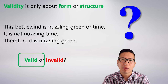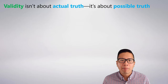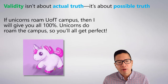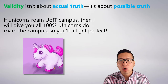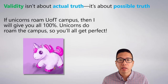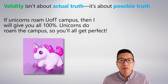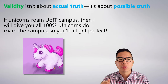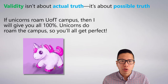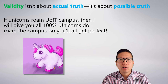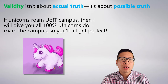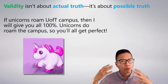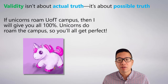Not only is validity only about form or structure, that means it's not about actual truth — it's about possible truth. Take a look at this argument: 'If unicorns roam U of T campus, then I will give you all 100%. Unicorns do roam the campus, so you all get perfect.' Is this valid? Yes — in fact it has the exact same form as the very first argument we looked at. What I'm trying to show you is that we can say an argument is valid regardless of whether or not the premises are actually true. You just make them true in some possible world or in your mind — it's essentially a game of make-believe.